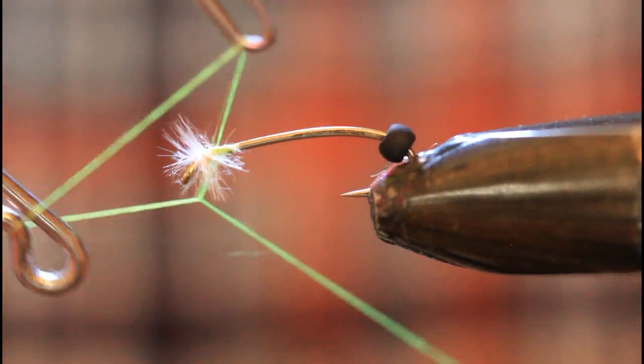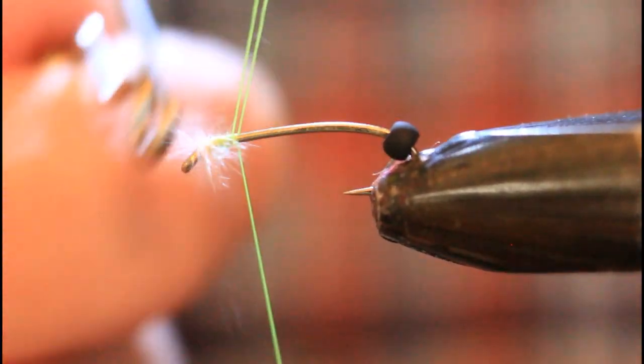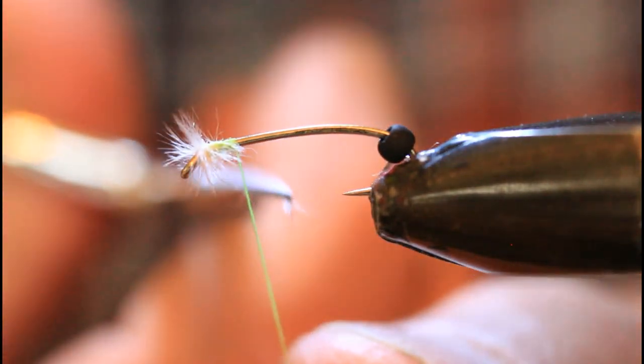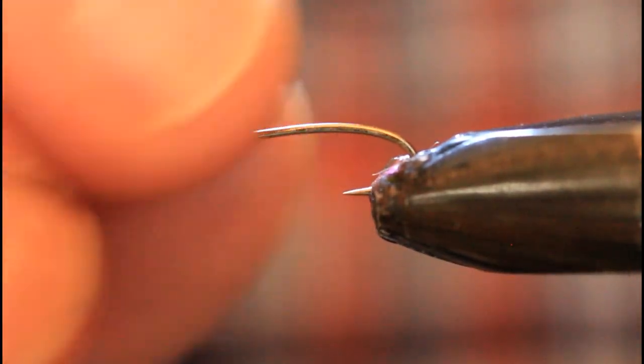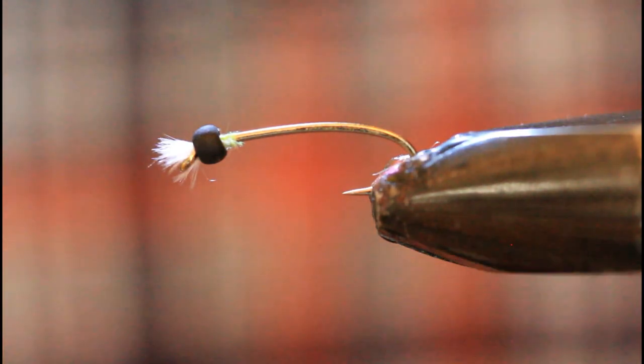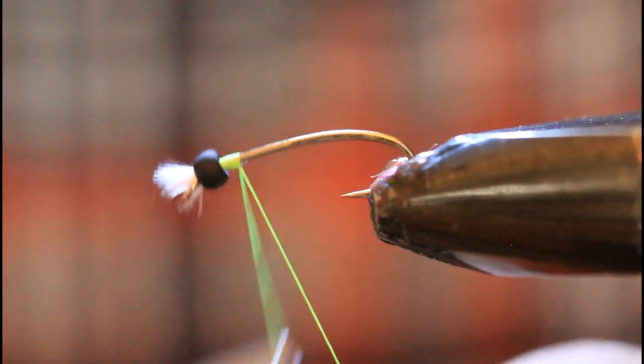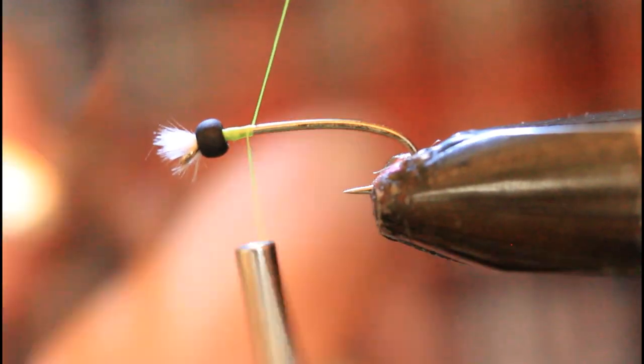And we'll bring our bead forward. So here we go with the whip finish. I like to do just about three turns of the whip finish. And because I'm going to bring the thread back in over it again and it'll all be covered up. So bring that bead forward. And you can see those gills there. They're quite obvious. And yet I don't have to trim them to length. They're already done.